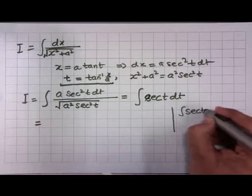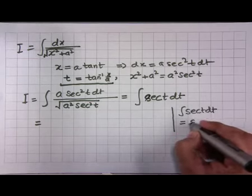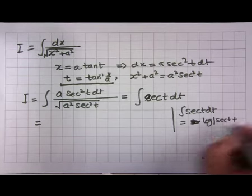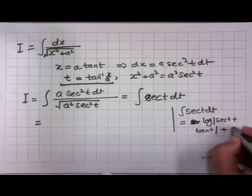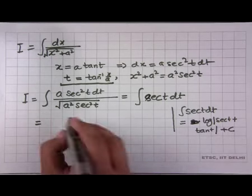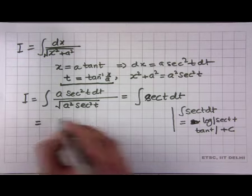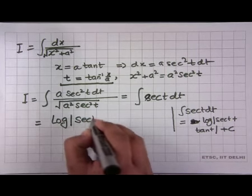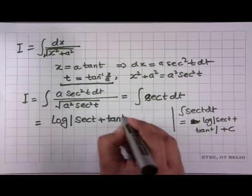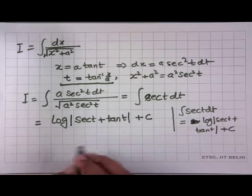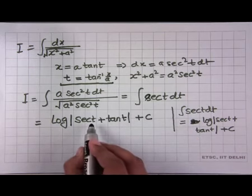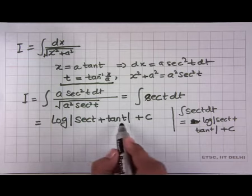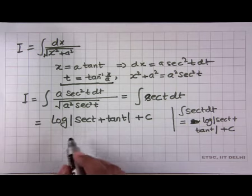We already know ∫sec(t)dt = log|sec(t)+tan(t)| + C. Using this formula, the integral becomes log|sec(t)+tan(t)| + C. Now we have to go back from t to x. If I substitute t = tan⁻¹(x/a), I get a complicated expression sec(tan⁻¹(x/a)).